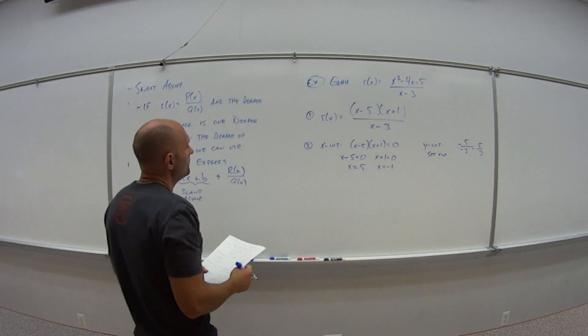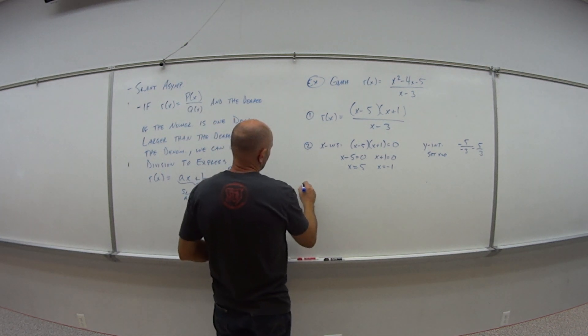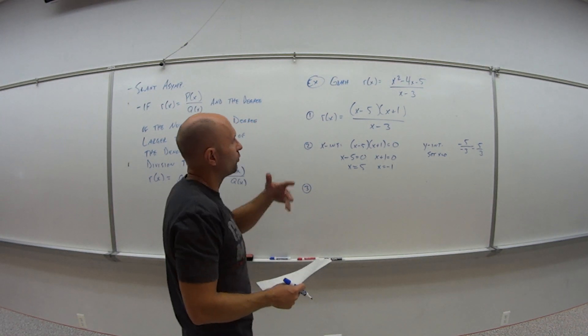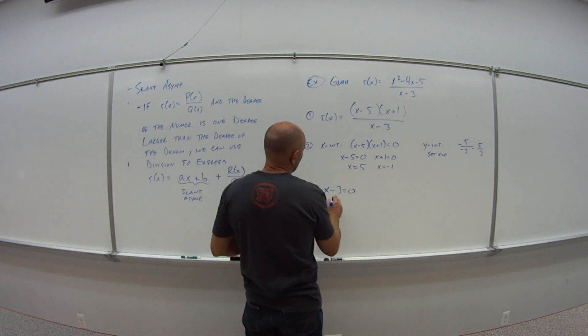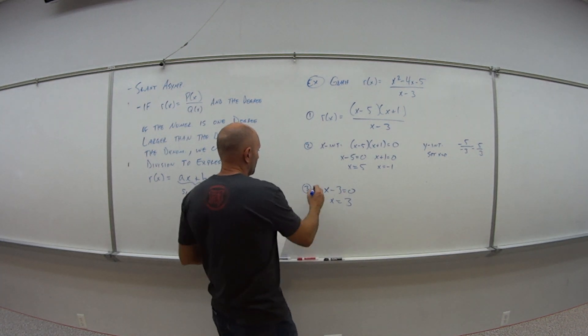Step three, my vertical asymptote. So that's what? That's where is the denominator equal to 0. So x minus 3 is 0. So x is equal to 3. That's my vertical.